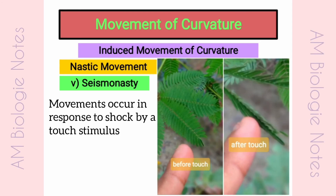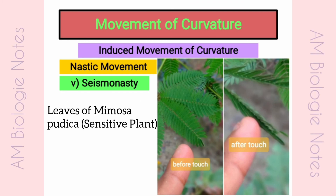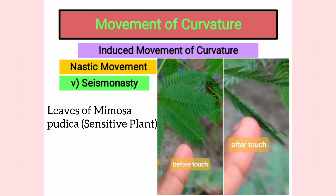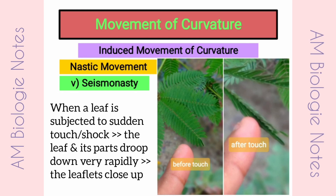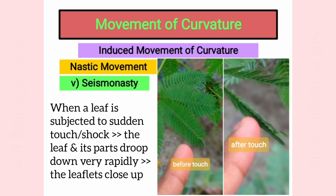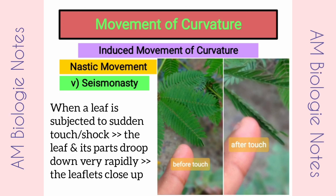Seismonasty: These movements occur in response to shock by a touch stimulus. They are best exhibited by the leaves of Mimosa pudica, the sensitive plant. When a leaf of Mimosa is subjected to sudden touch or shock of any kind, the leaf and its parts droop down very rapidly, and the leaflets close up.